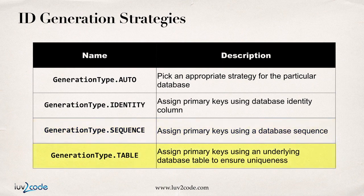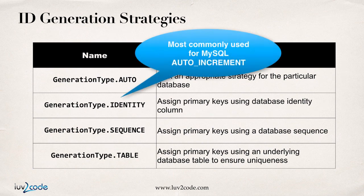You can also make use of GenerationType.TABLE, which assigns the primary keys using an underlying database table to ensure uniqueness. You'd need to look at your actual database implementation to find out which one is supported, and you can check the Hibernate docs for all the details since it varies across different databases. For MySQL, the most common generation strategy is GenerationType.IDENTITY, and that's a good one because it allows you to leverage the auto-increment feature of MySQL.